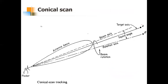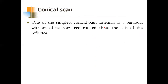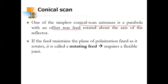So here you can see this is the target axis, this is the rotation axis, and this is the beam axis. So this beam will keep rotating, and in whichever position you get a better signal, that position — that degree of rotation — will be taken into consideration. The conical scan antenna is a parabolic reflector antenna with an offset rear feed, rotated about the axis of the reflector. Offset in the sense of squinted off axis, like how we drew in the previous slide.